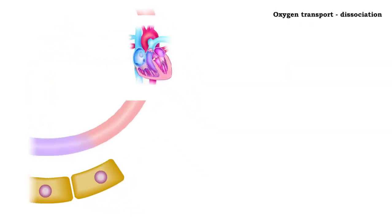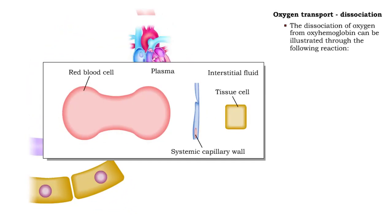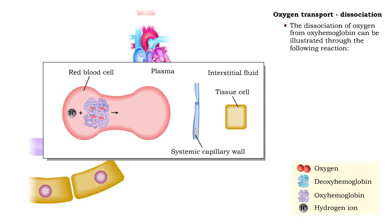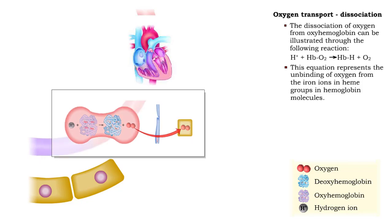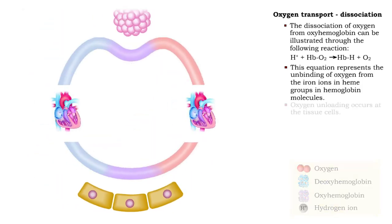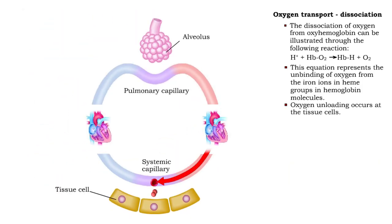The dissociation of oxygen from oxyhemoglobin can be illustrated through the following reaction. Hydrogen ions bind to oxyhemoglobin to form deoxyhemoglobin and oxygen. This equation represents the unbinding of oxygen from the iron ions in heme groups in hemoglobin molecules. Oxygen dissociation occurs at the tissue cells.